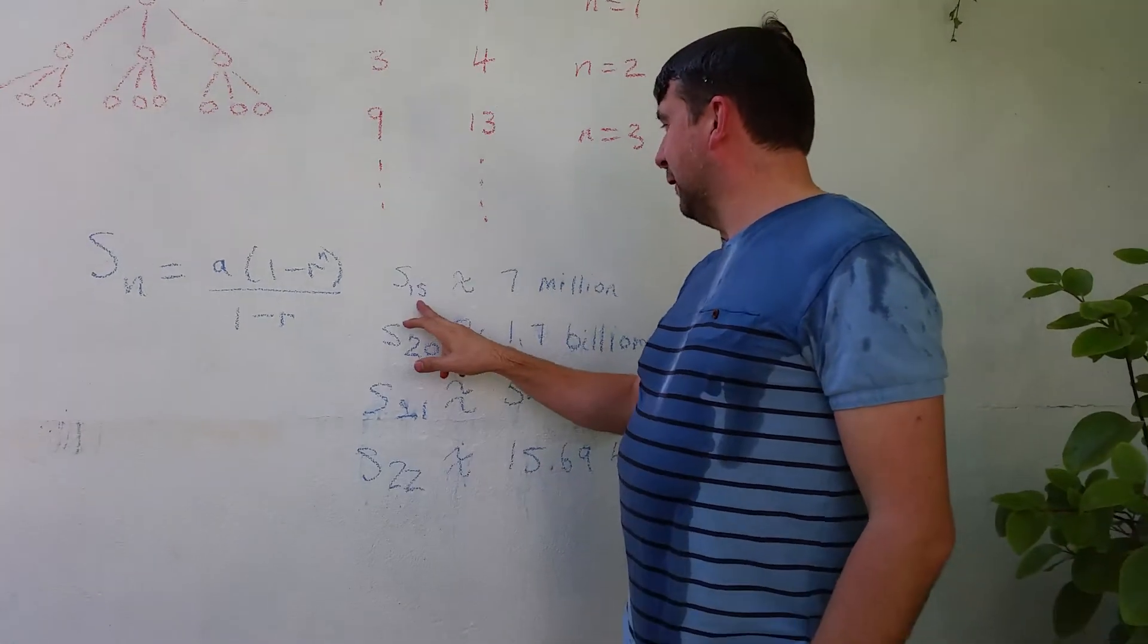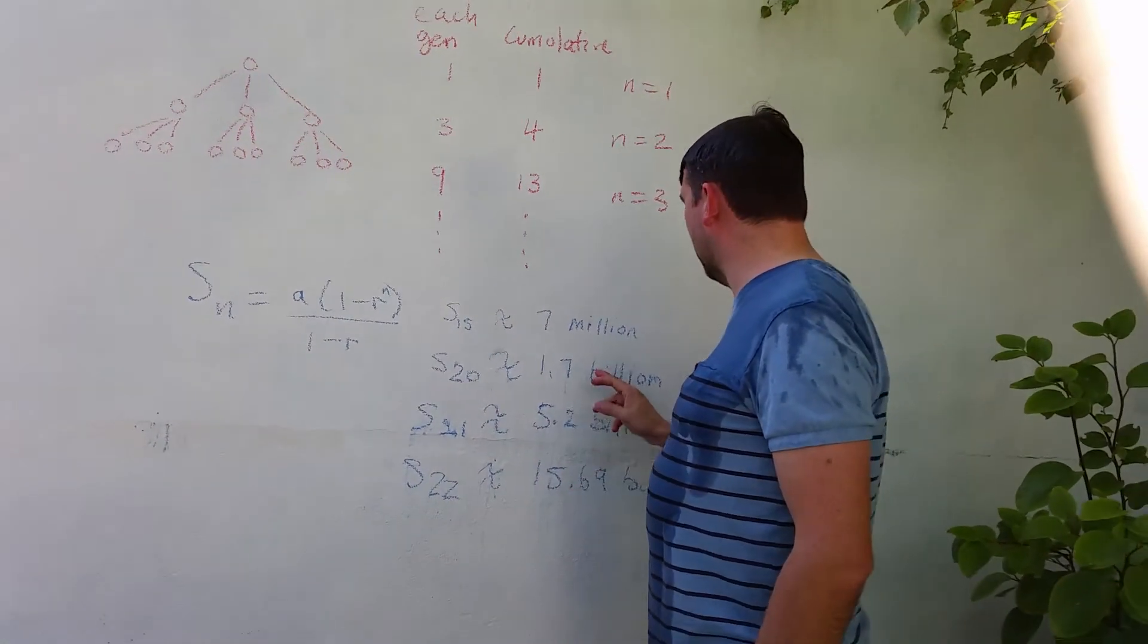And as you can see, by the 15th generation we've got 7 million, by the 20th generation we've got 1.7 billion.